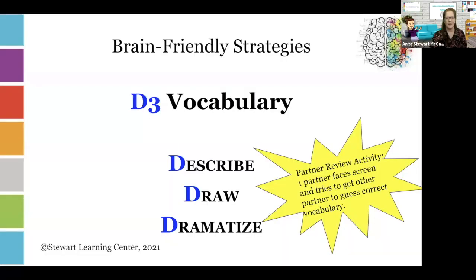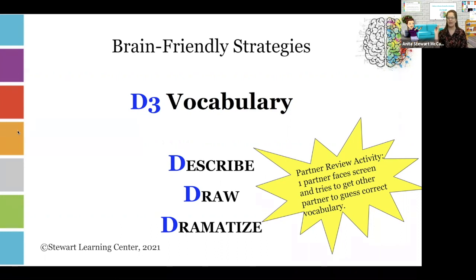I'm going to share my screen so we can look at an example of this strategy. For D-Cubed vocabulary in a face-to-face environment, we recommend showing the important vocabulary words one slide at a time, one word. Have your students pair up — partners work really well. One partner faces the screen where the word is displayed; the other partner faces away from the screen but can see their partner. Then in round one...